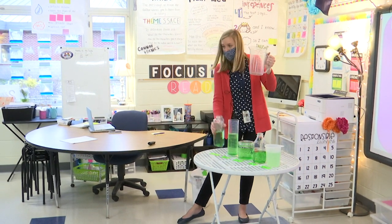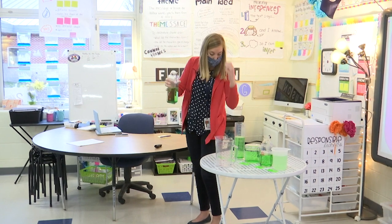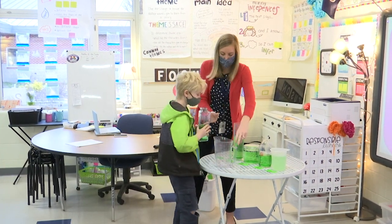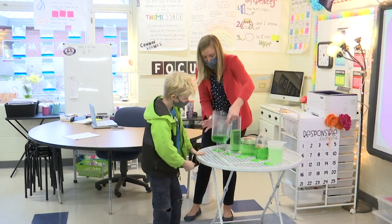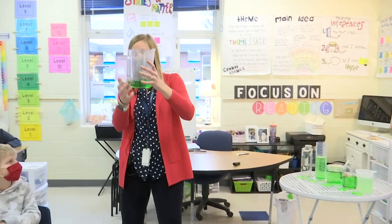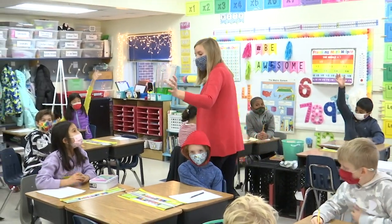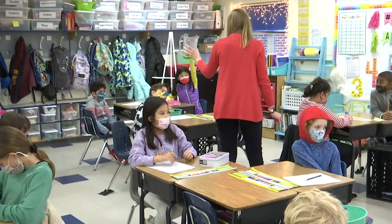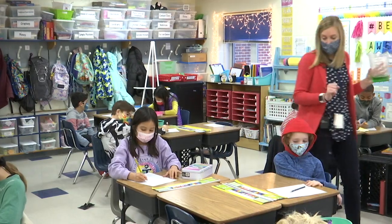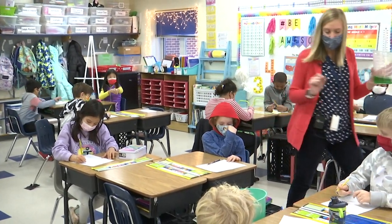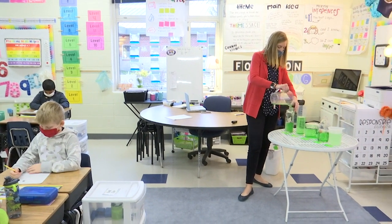Next to container number one, you are going to write how much liquid volume this is. Gage, come pour this in for me. Great job. Perfect. Let's see how much that is — cups. It's between our number line one and two. What does that mean? It's between one and two. Think about what we know about our number line. What does it mean, Rosemary? It's about one and a half cups. Excellent — one and a half cups. Next to wherever you put container number one, write one and a half cups. The abbreviation for cups is C.